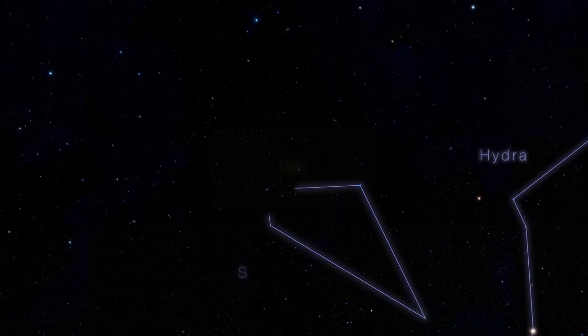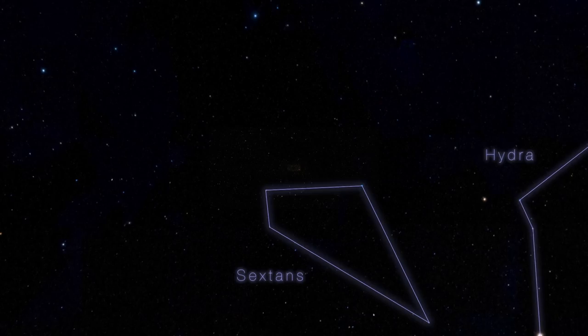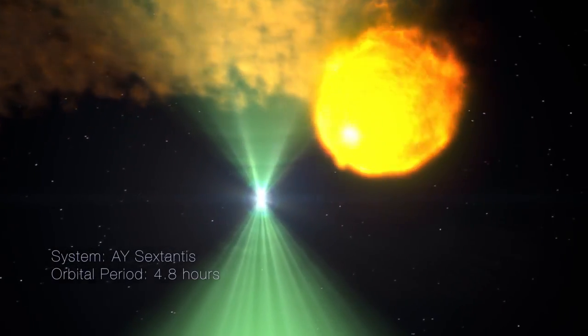About 4,400 light-years away in the constellation Sextans, there is an extraordinary binary system that pairs a rapidly spinning neutron star, or pulsar, with a star about one-fifth the mass of the Sun.